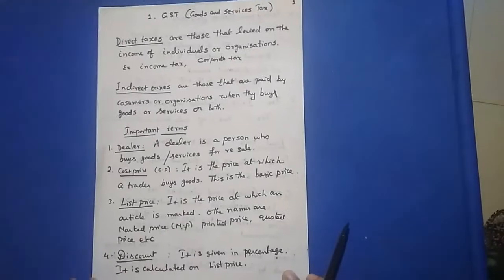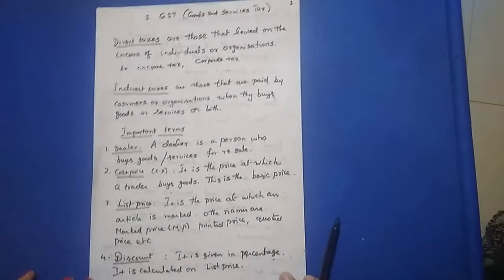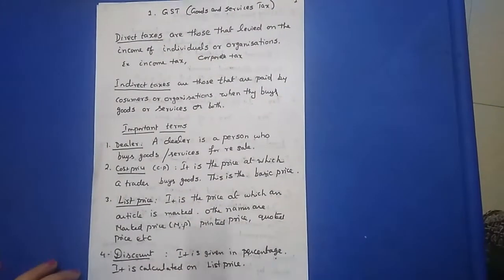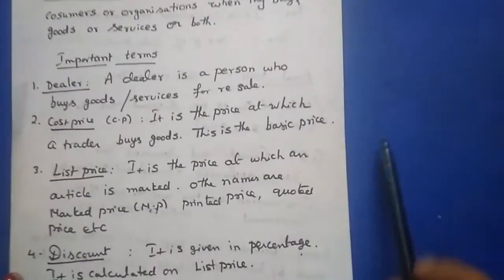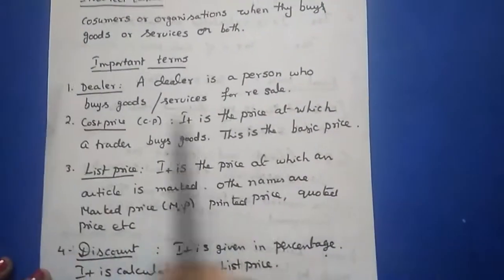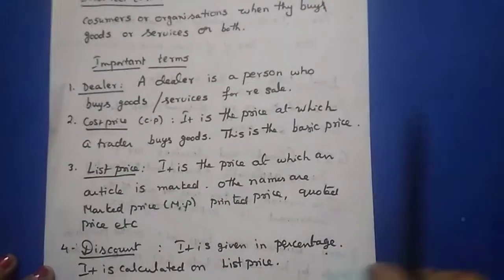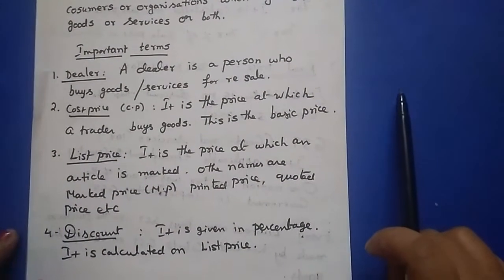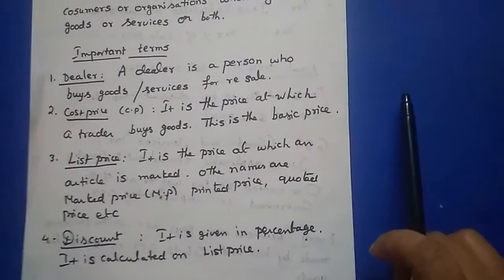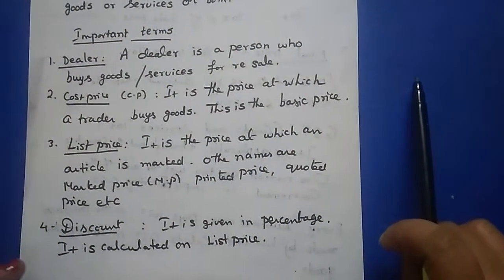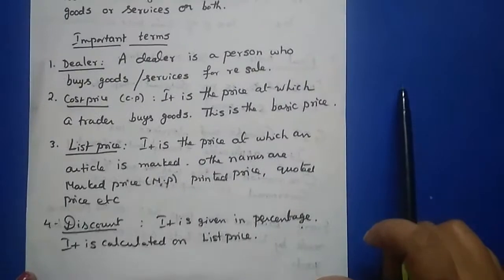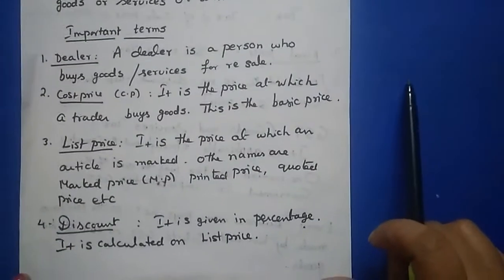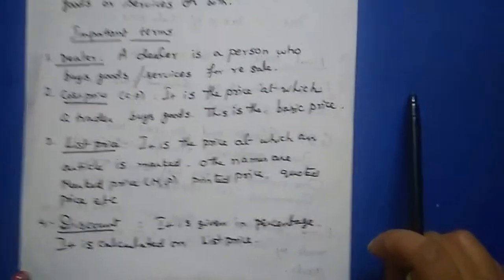Now the important terms you should know. First one: dealer. A dealer is a person who buys goods and services for resale — buying and then selling. Second: cost price. This is the basic price. It is the price at which a trader buys goods.